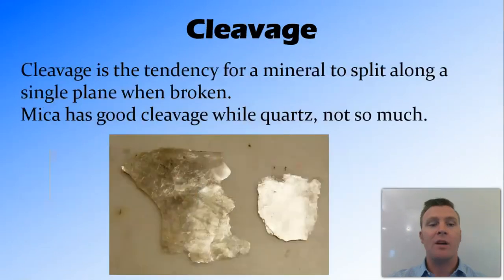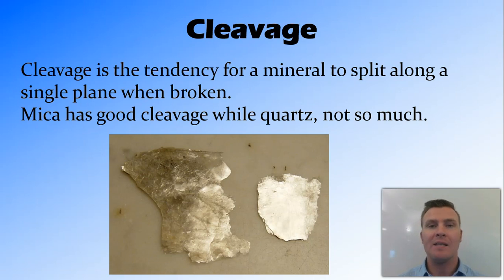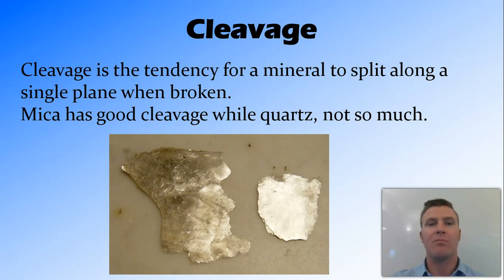The next thing we'll talk about is cleavage. When we're talking about cleavage, we're looking at the tendency for the mineral to split along a single plane. So for example, mica is something that has very good cleavage. When it breaks, it breaks into these thin sheets that you can see here. Quartz doesn't have very good cleavage — when it breaks, it shatters along lots of different planes.